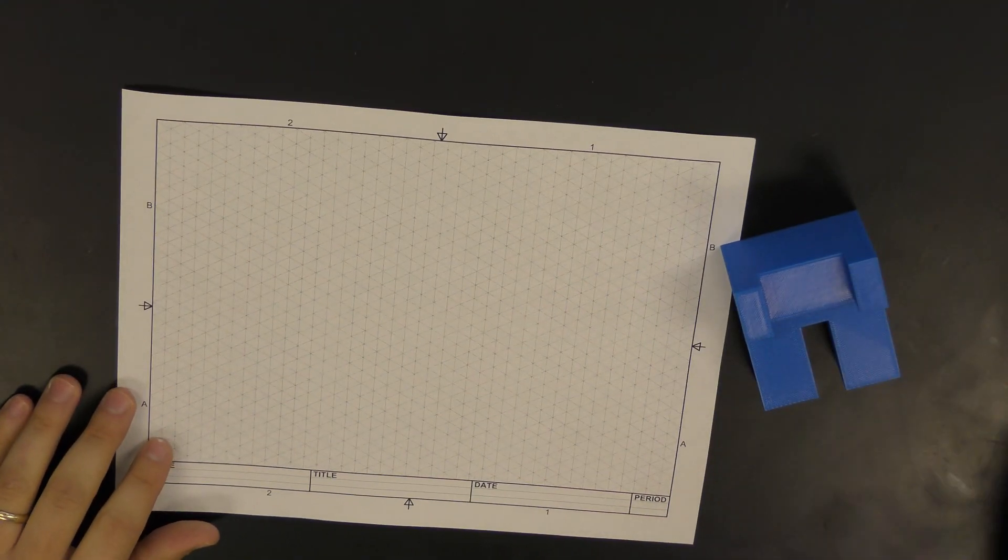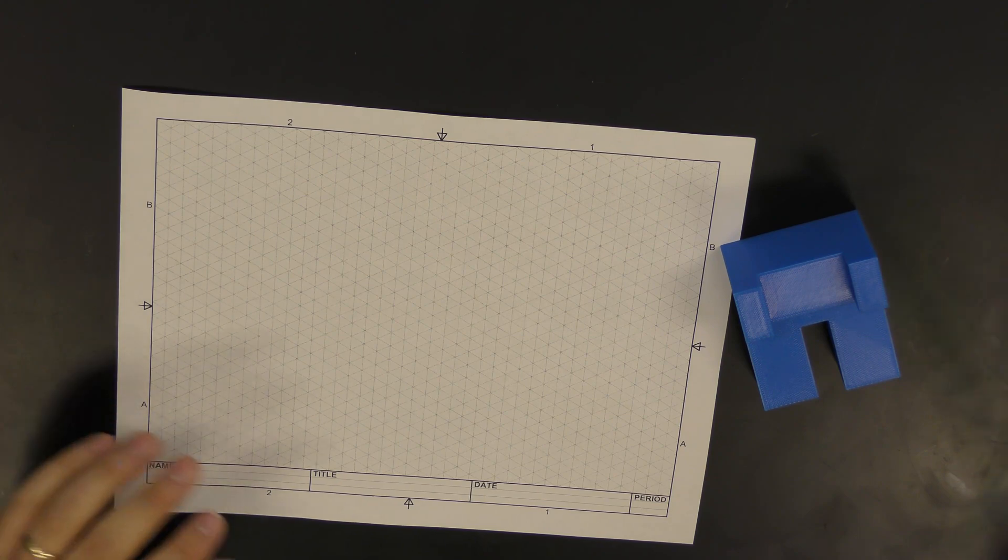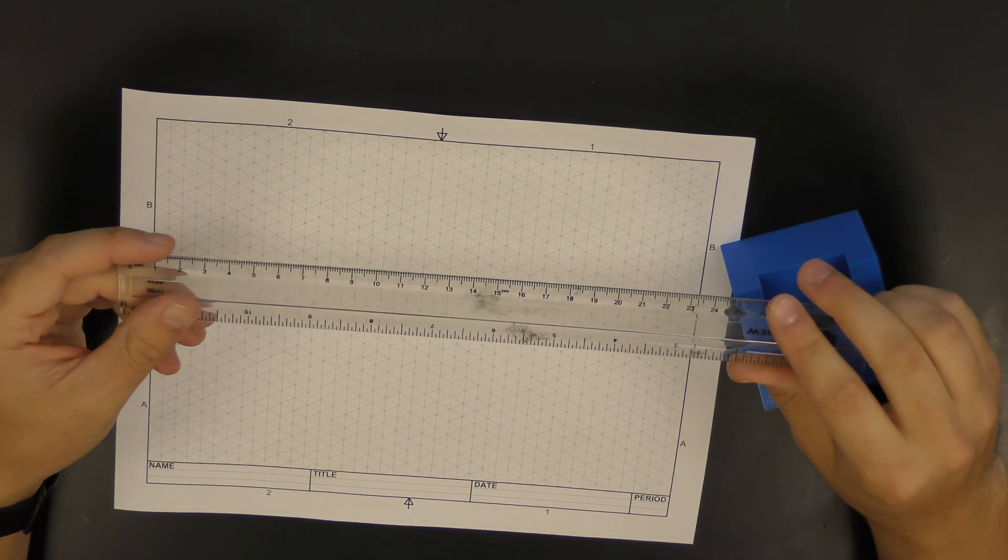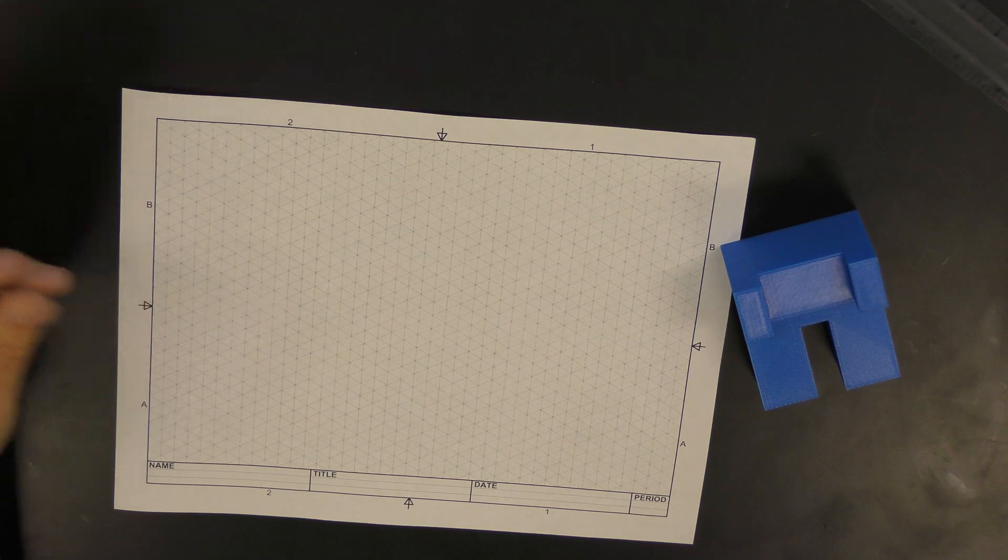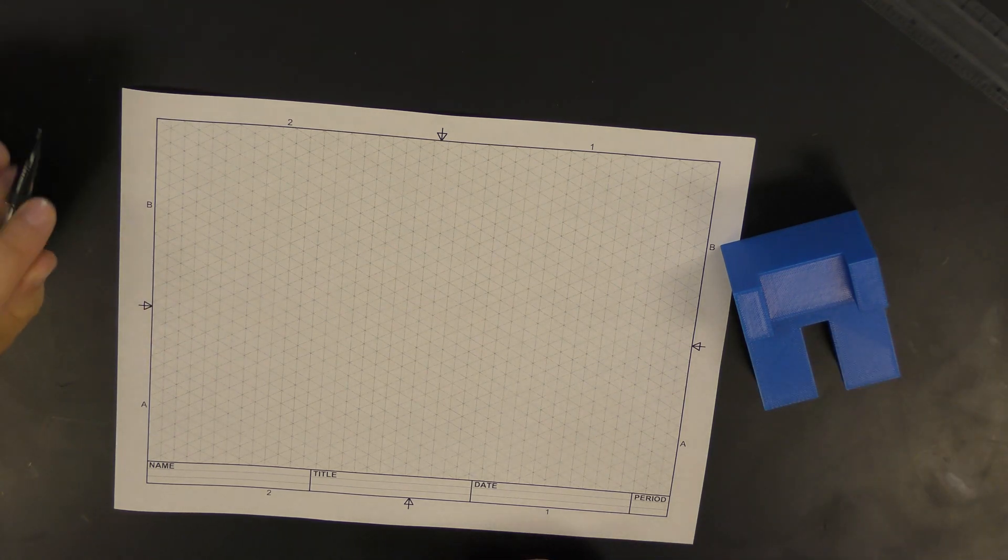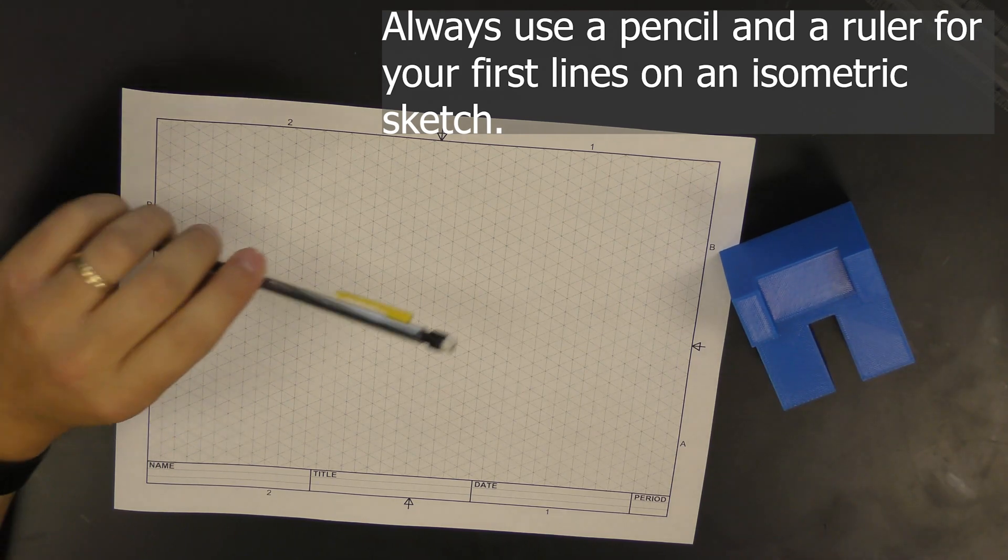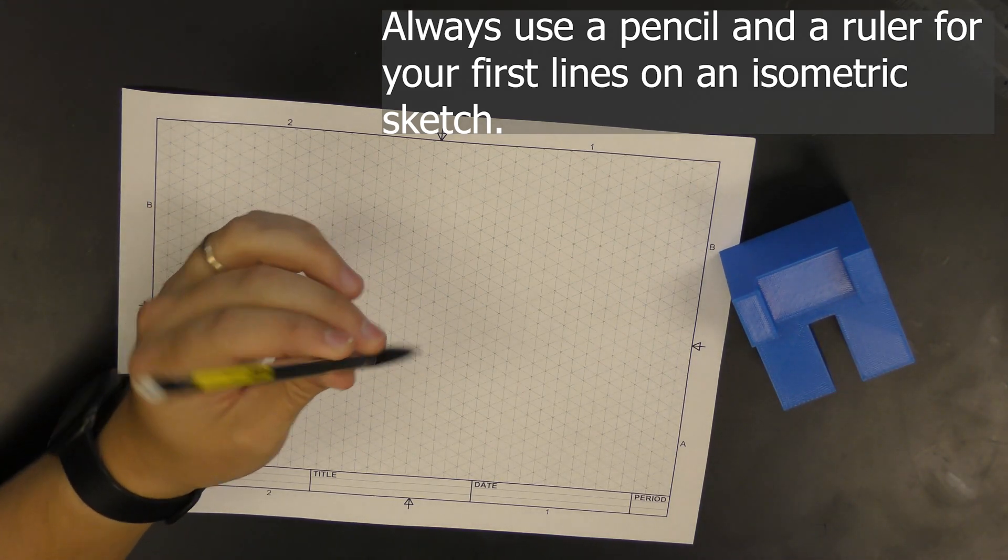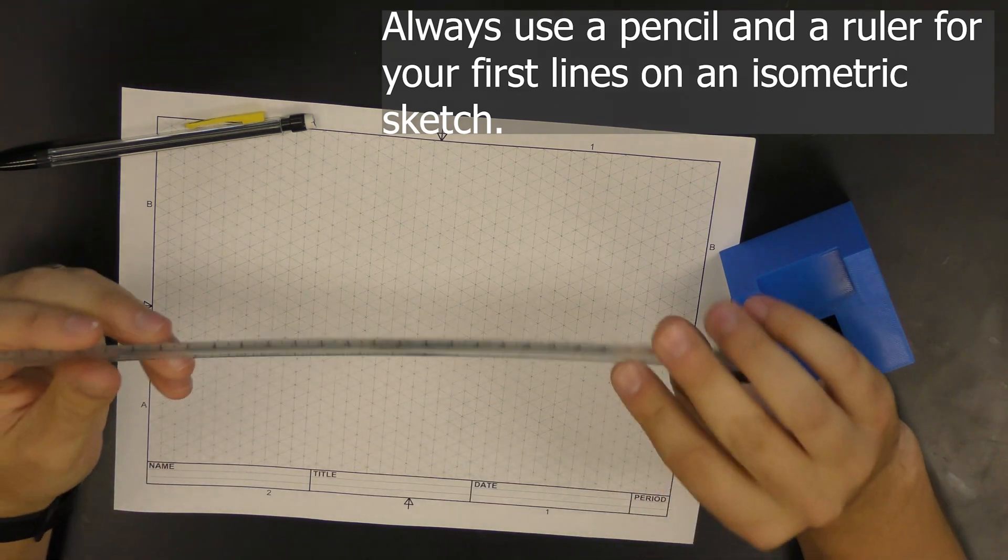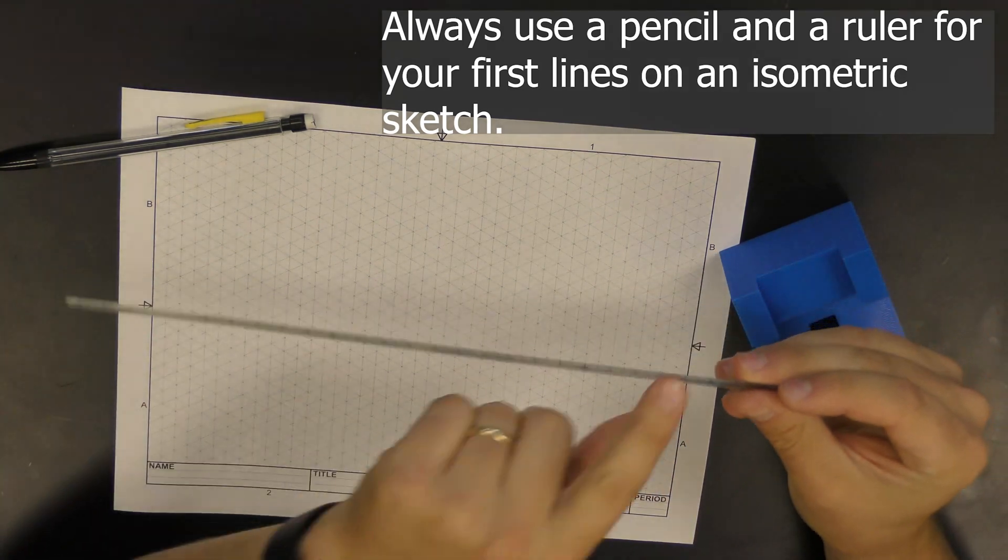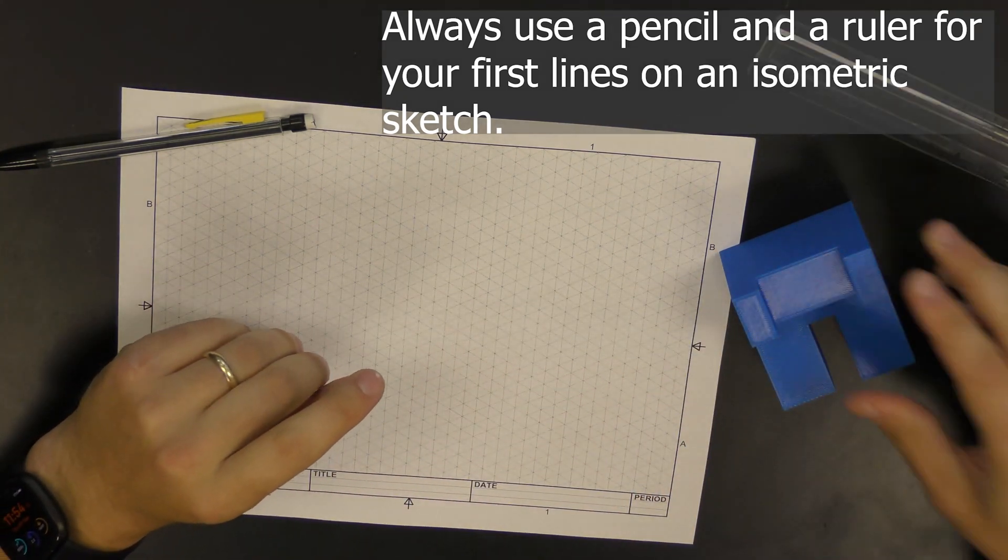When setting up our paper, the first thing we want to do is put our name, title, date, and period at the bottom. The next thing that's important is that we use a mechanical pencil and always use a ruler as a straight edge when starting our sketches. This ensures our lines are nice and straight, giving us the most detailed sketches possible.